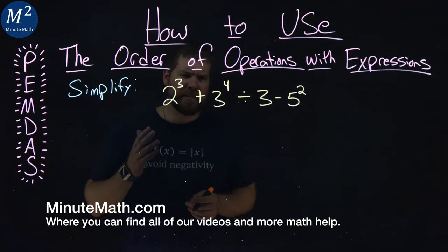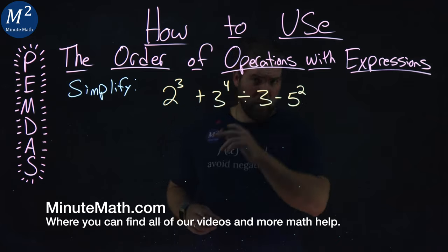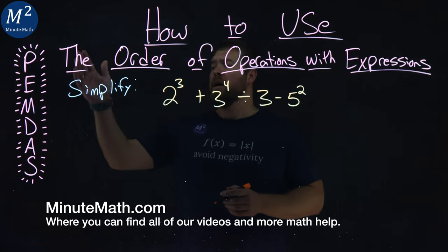We're given this expression here, 2 to a third plus 3 to a fourth divided by 3 minus 5 squared, and we have to simplify this expression using PEMDAS.